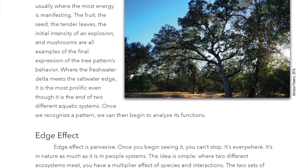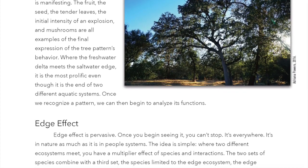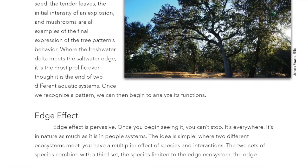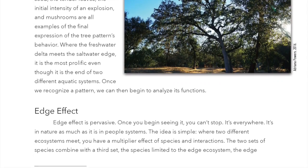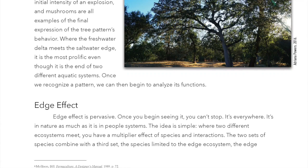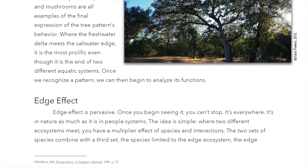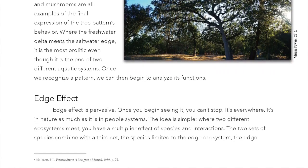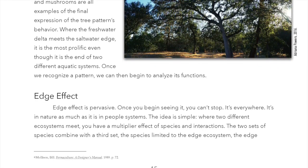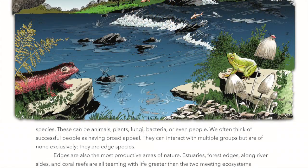Edge effect is pervasive. Once you begin seeing it, you can't stop — it's everywhere, in nature as much as in people's systems. The idea is simple: where two different ecosystems meet, you will have a multiplier effect of species and interactions. The two sets of species combine with a third set — the species limited to the edge ecosystem: the edge species.